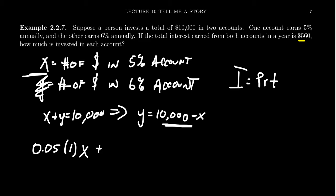Then we have the 6% account, which also invested for one year. And we times that by Y, but Y is just 10,000 minus X. And the interest is going to equal 560.